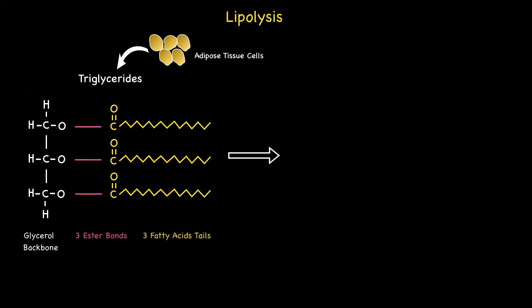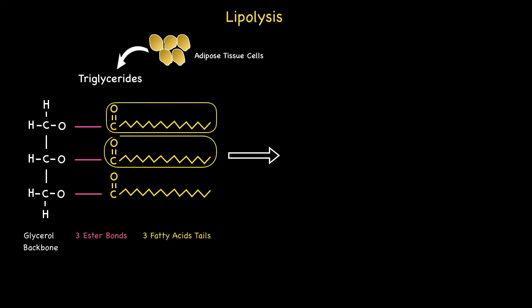Lipolysis involves the breakdown of triglycerides. The process more specifically releases the attached fatty acids away from the glycerol backbone. In order for this to occur, each of the ester bonds needs to be cleaved by a process termed hydrolysis, which simply means breaking bonds through a chemical reaction with water. The whole process requires three separate steps, and each step cleaves one fatty acid away from the glycerol backbone until all fatty acids are liberated.